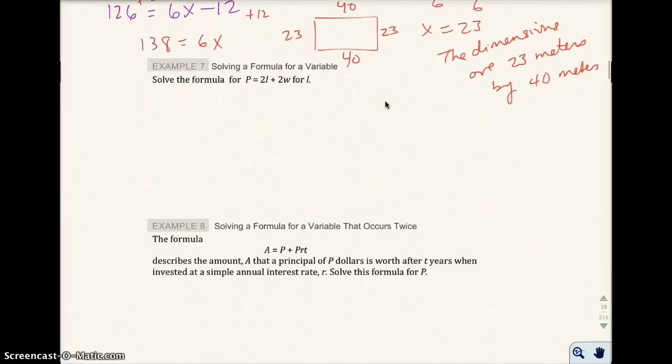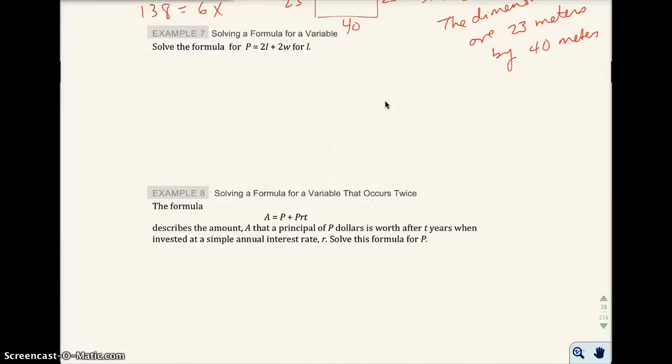Let's look at example 7. Solve the formula P equals 2L plus 2W for L. This is one of the problems where you're solving for a specified variable. And we recognize this formula. This is the formula we actually just did a second ago. We're trying to get L alone. Okay, that's what the problem is asking me to do.